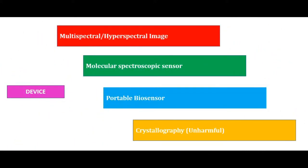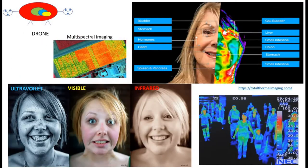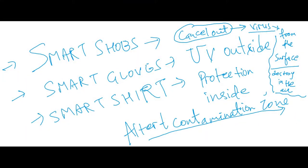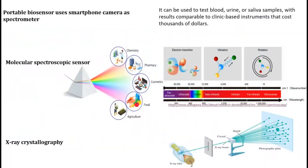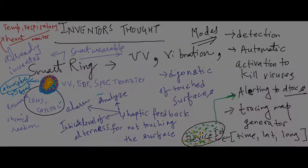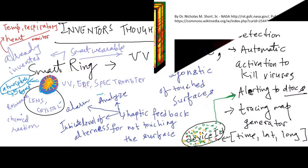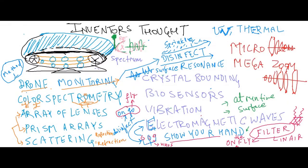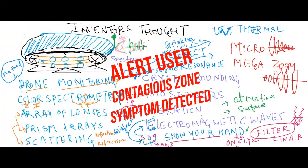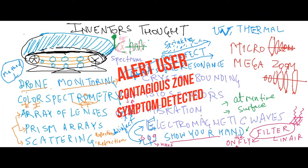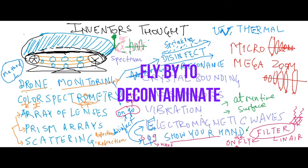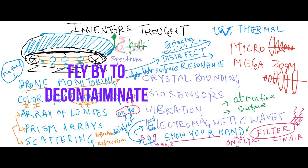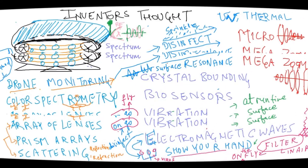Hello viewers, welcome to the Inventors Talk. In this video, we will broaden our imagination to develop devices which can take shape in the future. This will help in fighting viruses on the go. The imaginary inventor device will function to detect and alert the user about presence, and also do sanitization at runtime by air and on the surface.